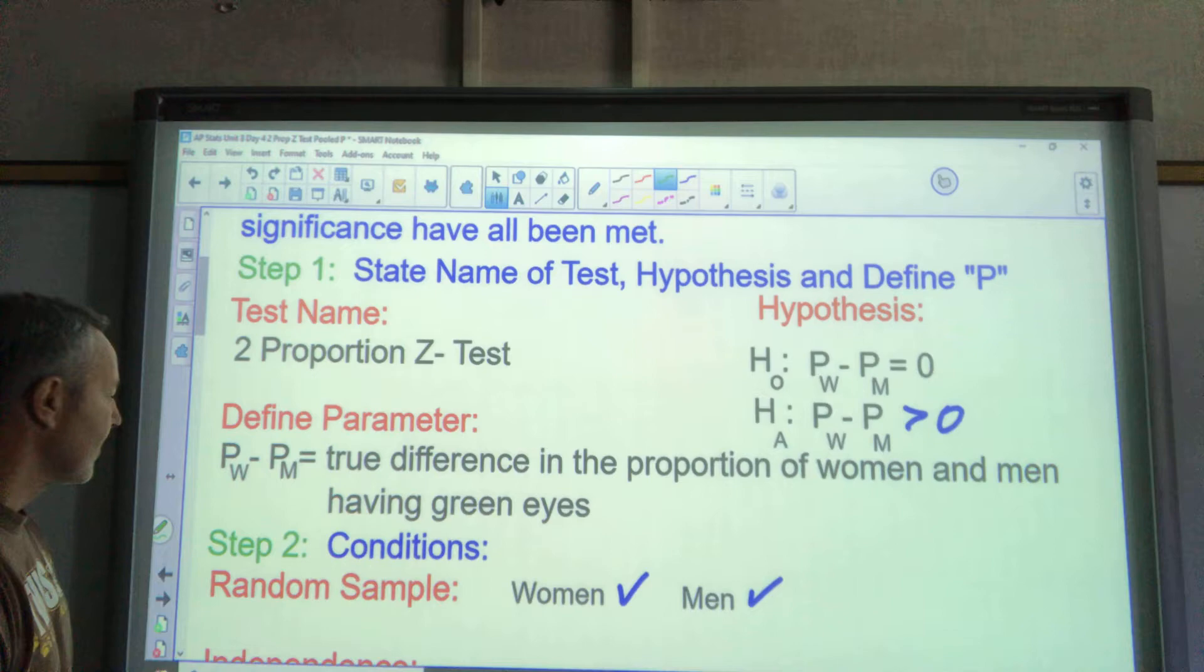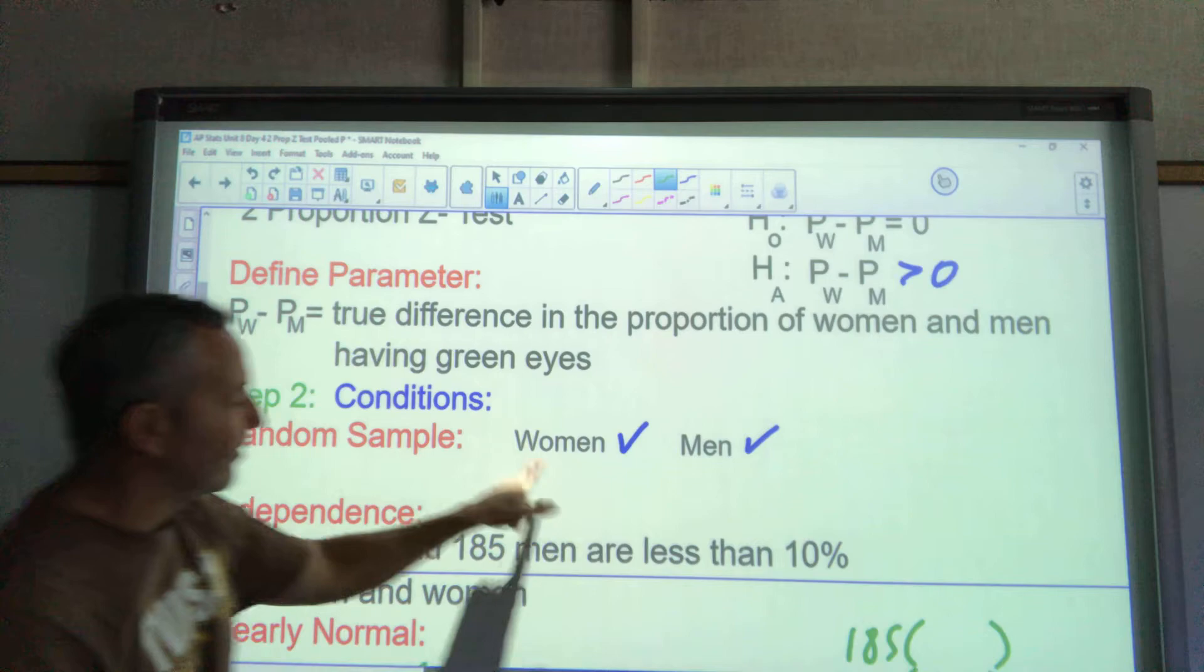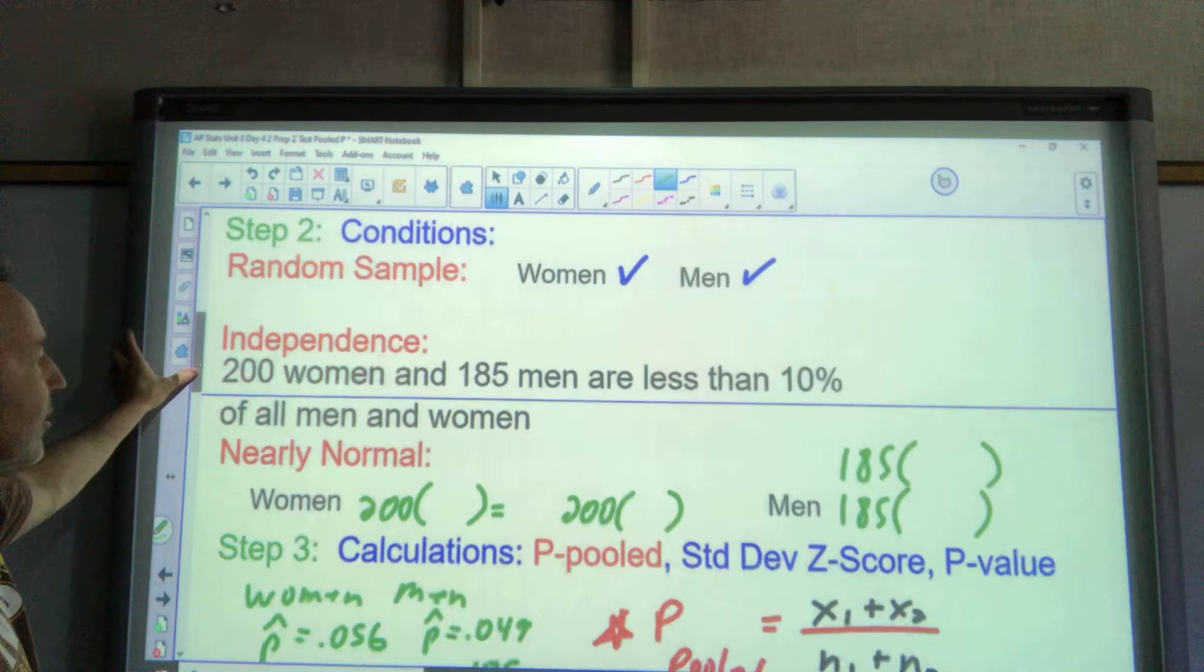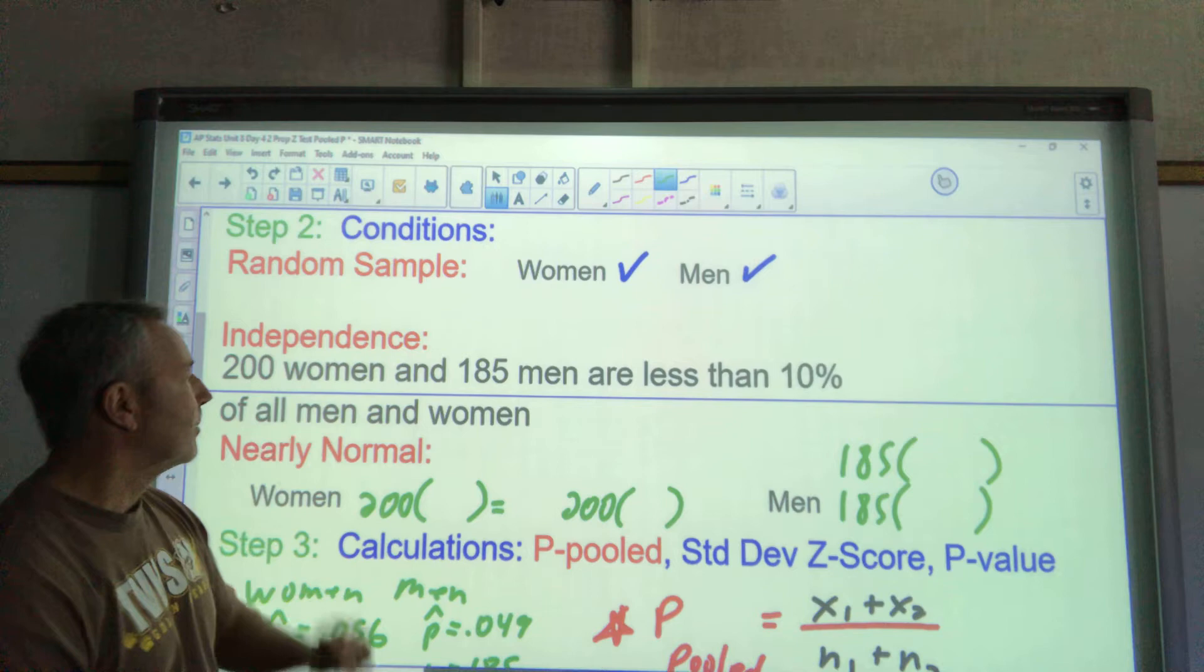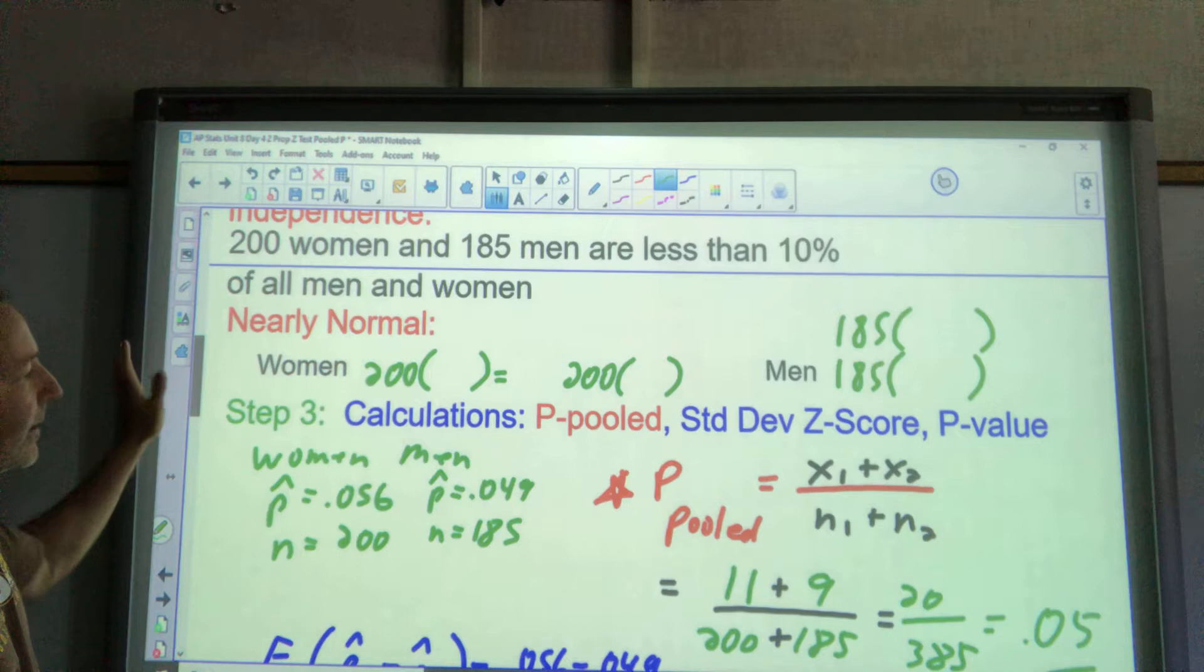We are going to do our conditions, even though it said we don't have to. Condition: random sample. It said they were an SRS, a simple random sample. Notice I have two groups. I have to address both the groups. Check, check. Independence: again I have to address the men and the women. I like to combine them; you could do them separately. 200 women and 185 men are less than 10% of all men and women. That would suffice there.